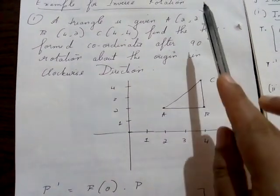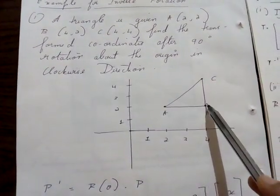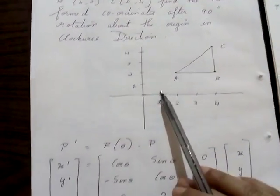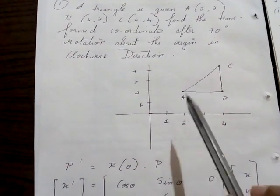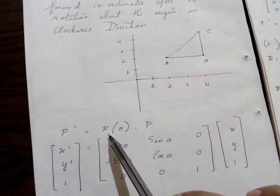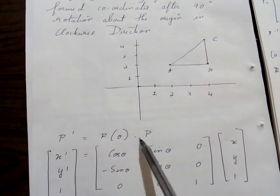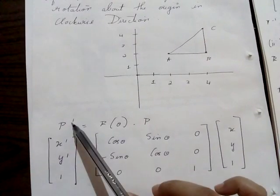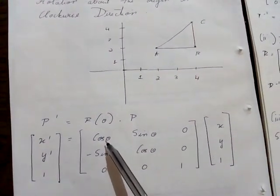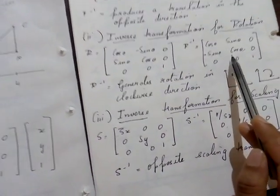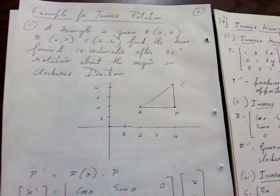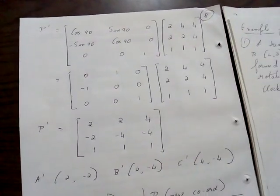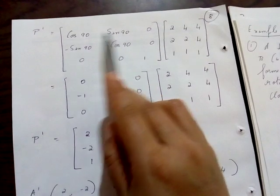So A is (2,2), B is (4,2), and C is (4,4). We need to find the new coordinates. There is no pivot point or fixed point given. P-dash equals R(theta) dot P, where R(theta) is the inverse rotation matrix: cos theta, minus sine theta, sine theta, cos theta — and P is the old coordinate.